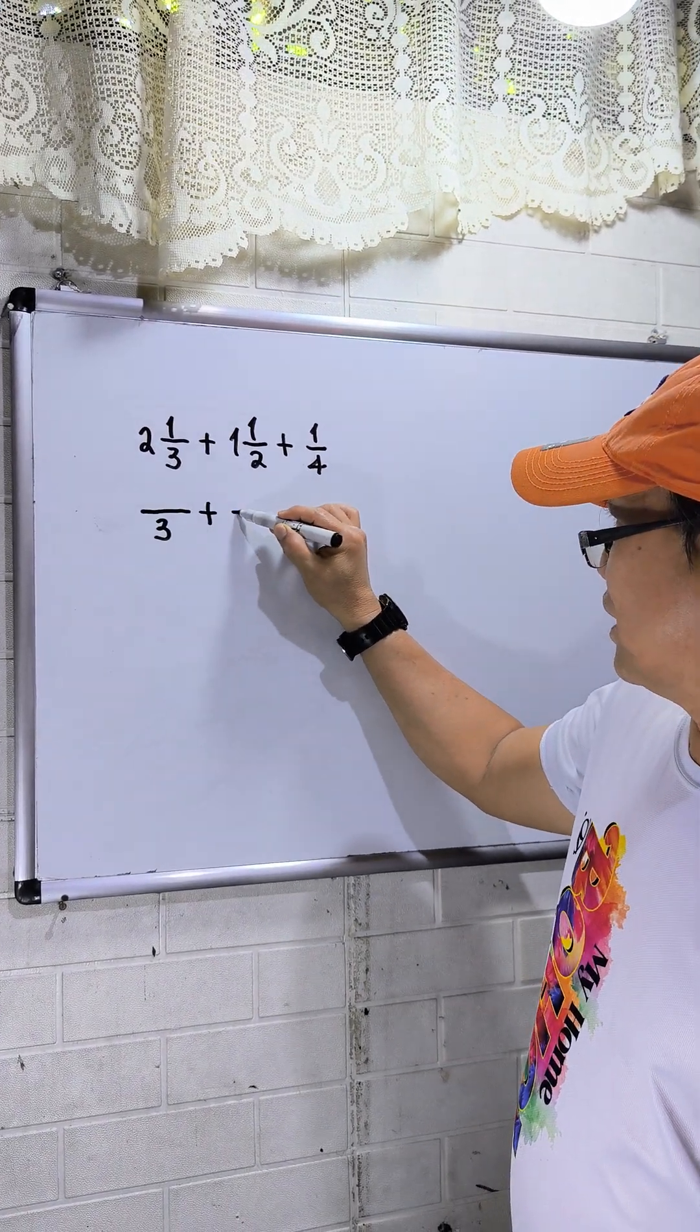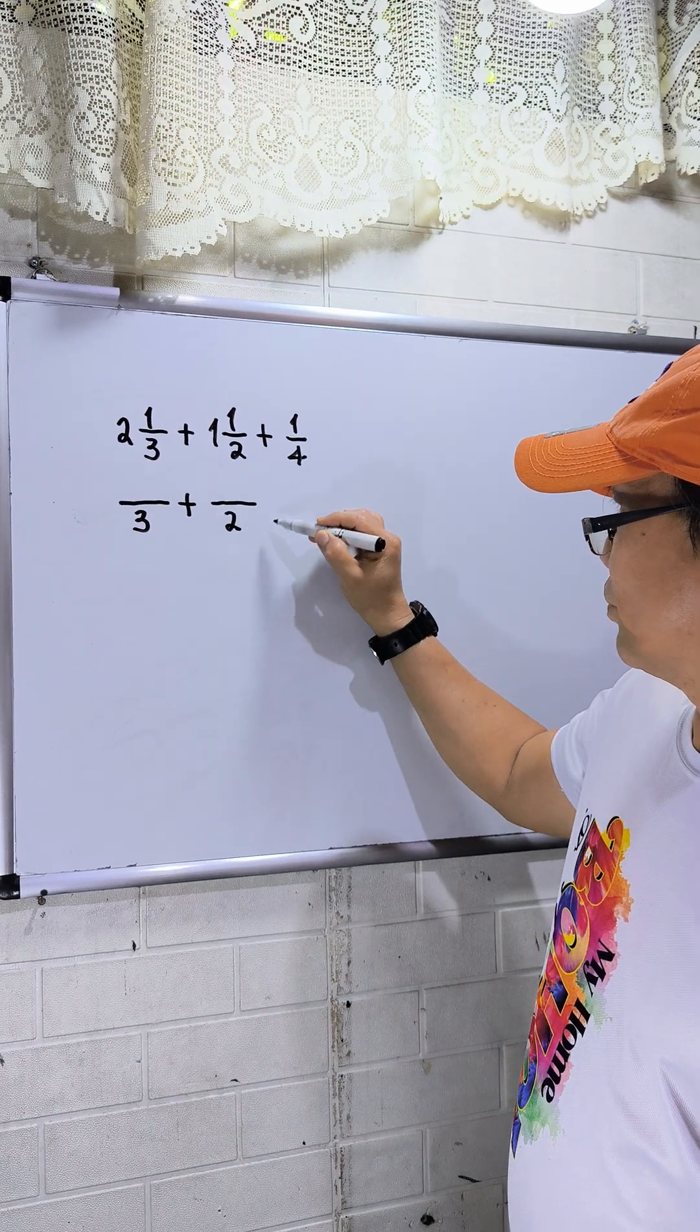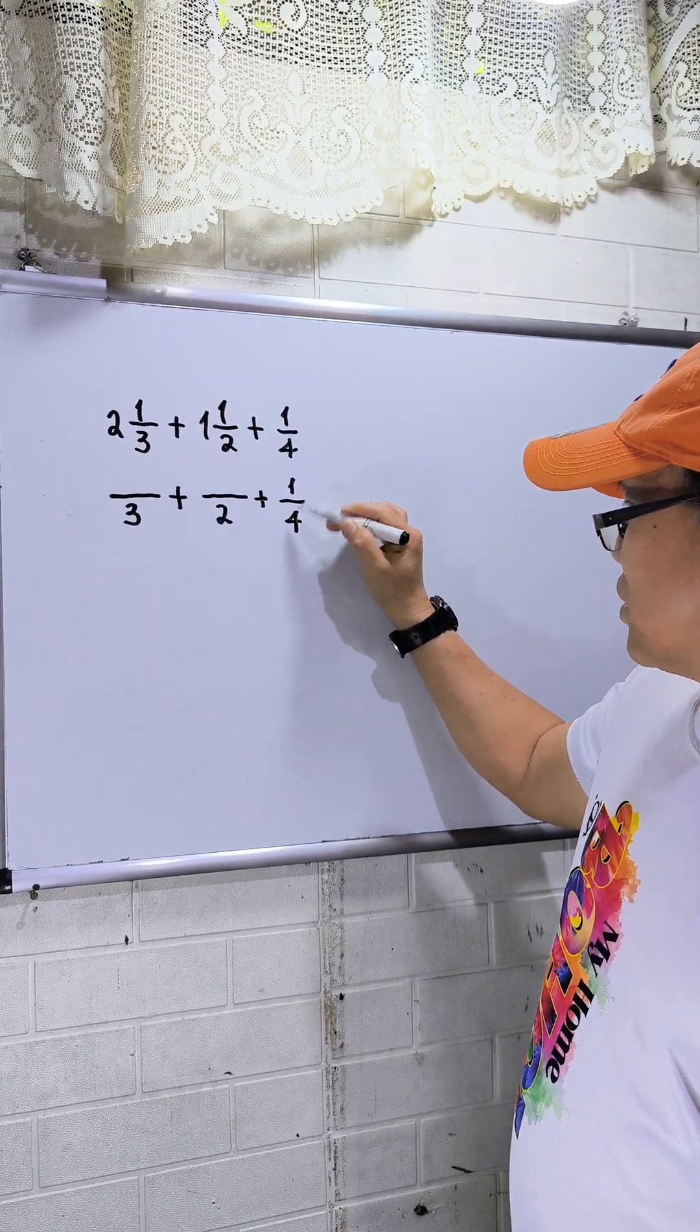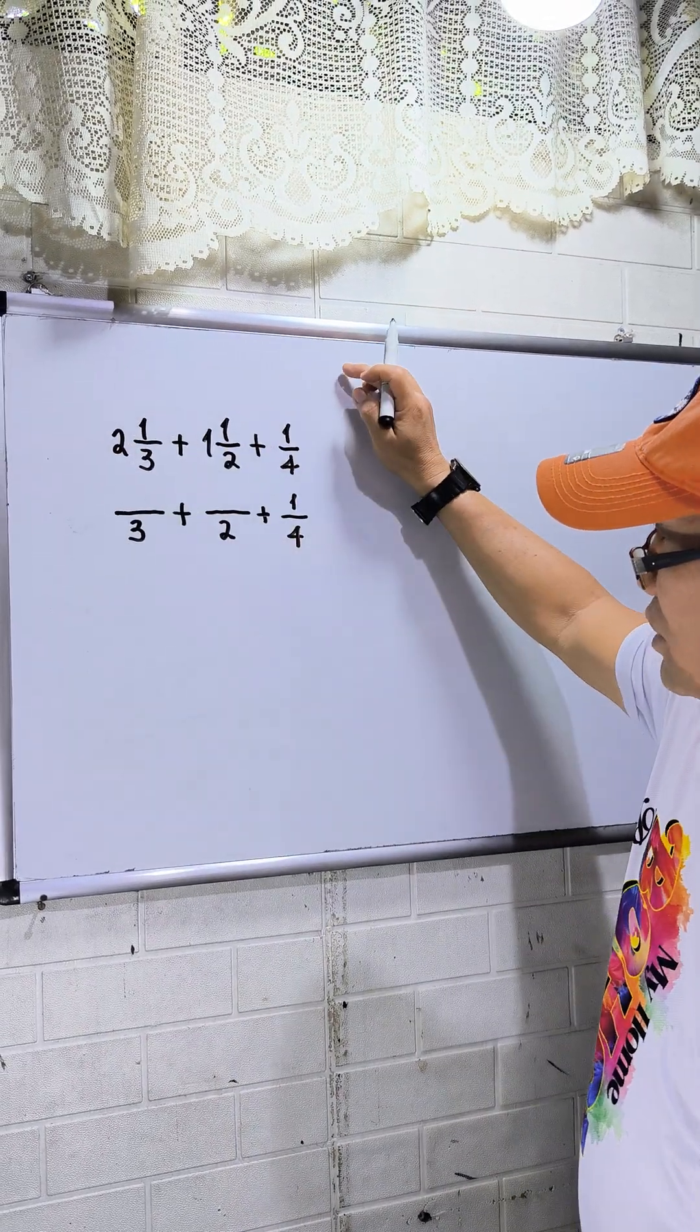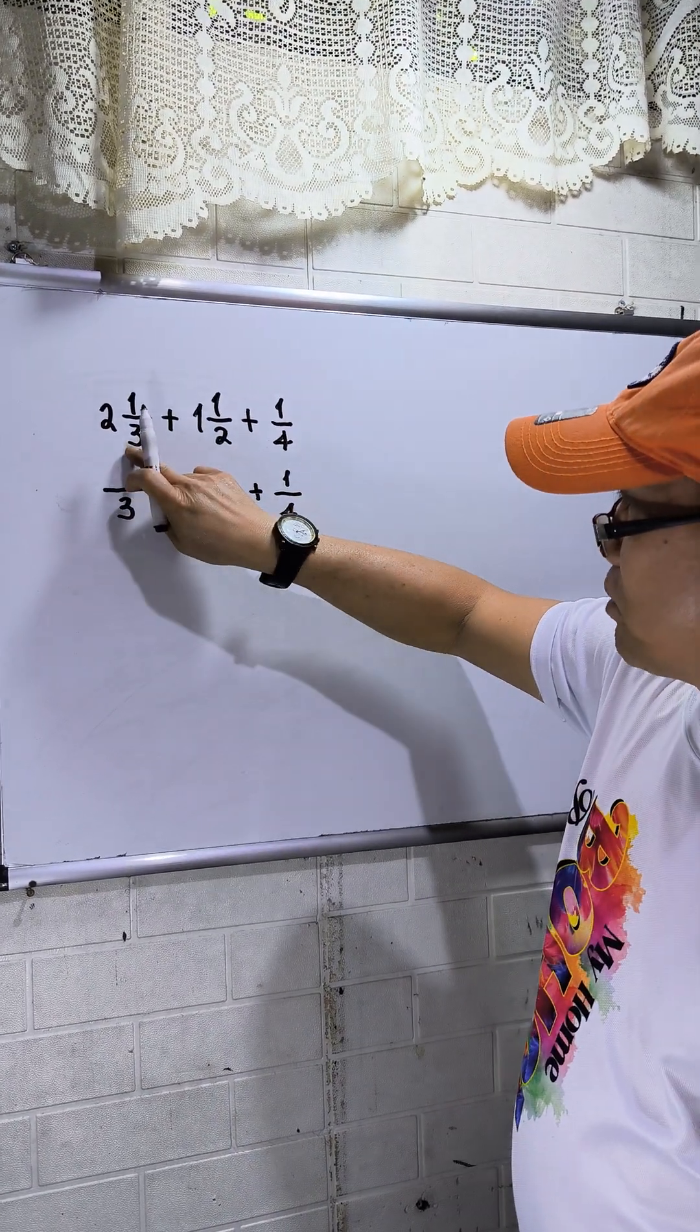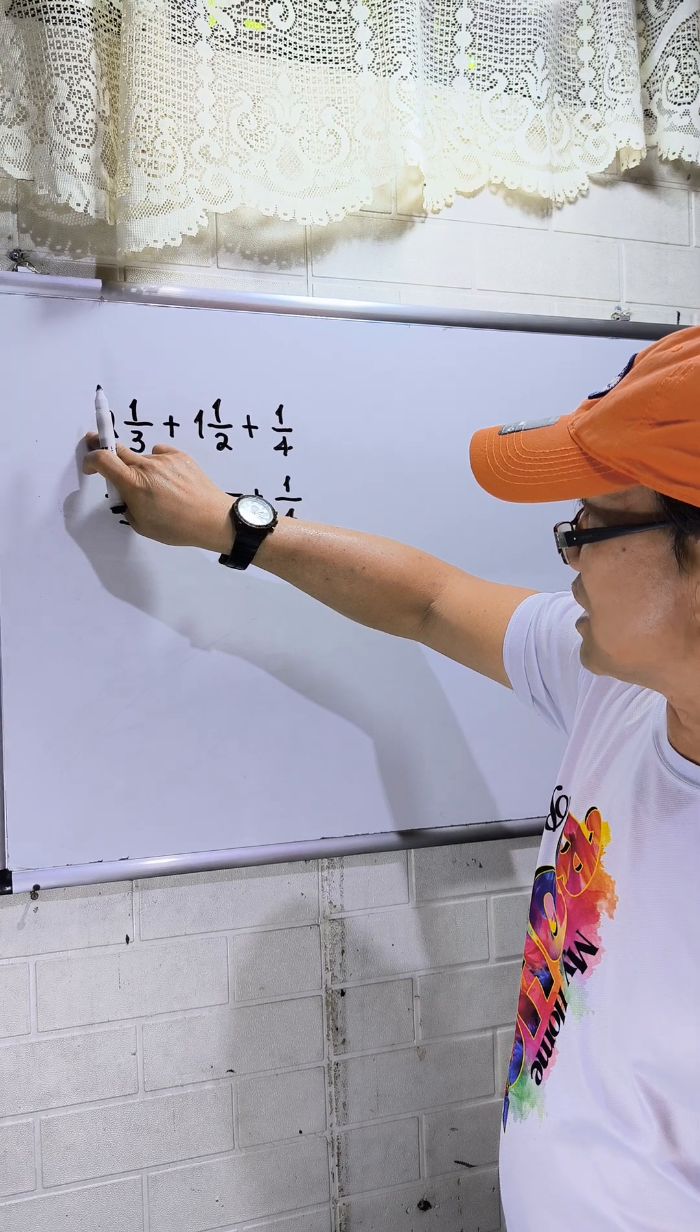I need to transform 2 1/3 to improper fraction. Just multiply 3 times 2, that is 6, plus 1 equals 7.